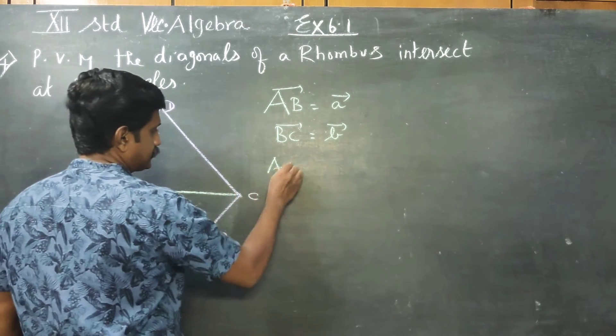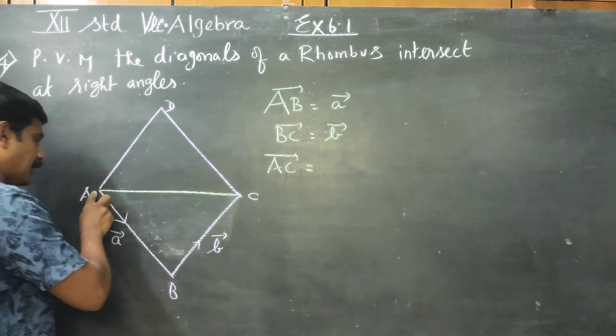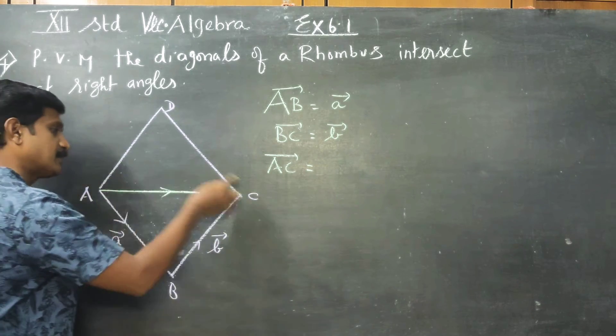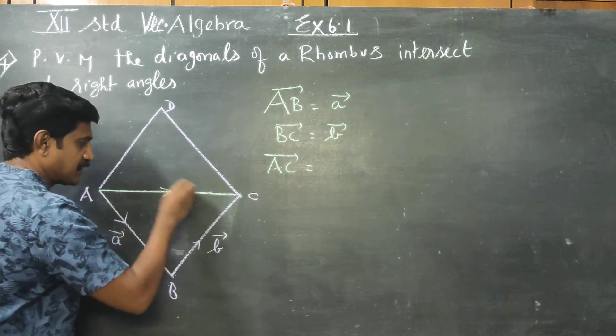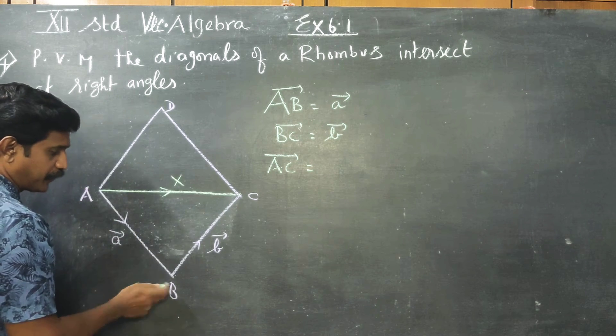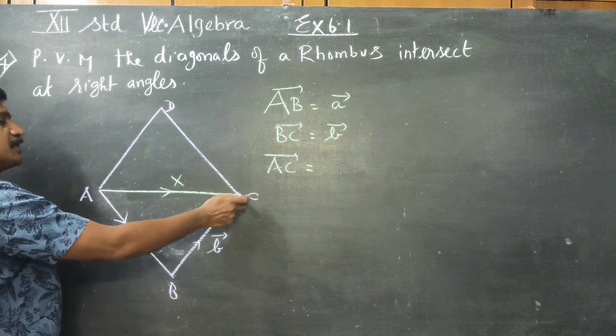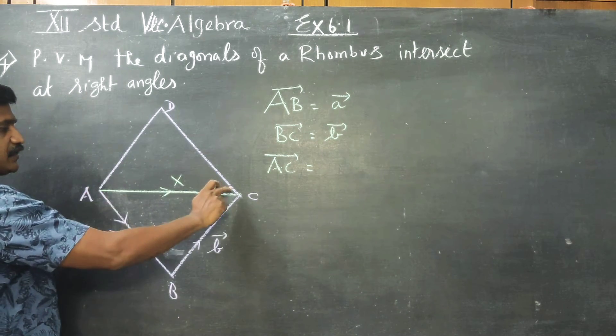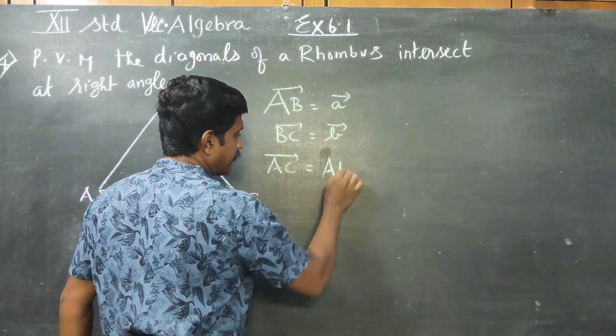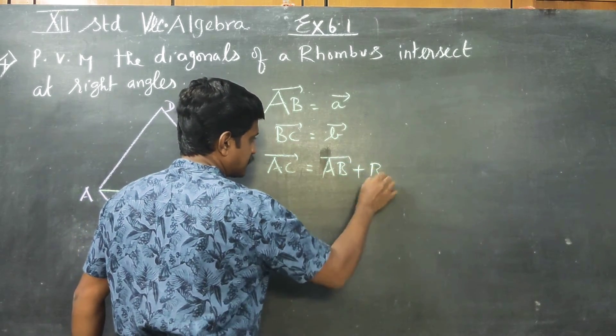I want AC vector. AC is equal to AB plus BC vector. So AC will be a vector plus b vector.